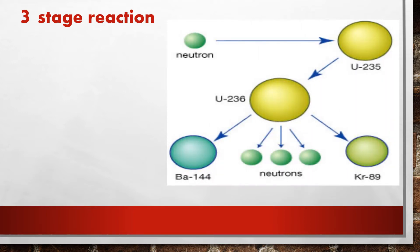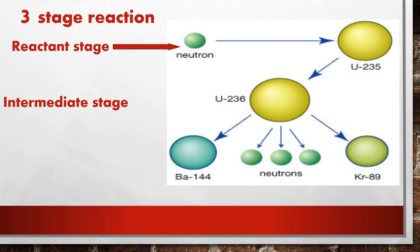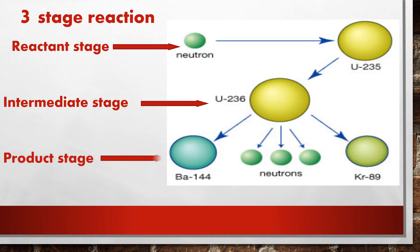Now let's study some important properties of nuclear fission reaction. First, it is a three-stage reaction — it completes in three stages. The first stage is called the reactant stage, in which we bombard a neutron on uranium. The second stage is called the intermediate stage, which lasts only a few seconds, in which uranium absorbs the neutron and goes into a highly excited state. The third stage is called the product stage, in which we get krypton and barium with the release of three neutrons.